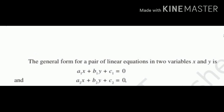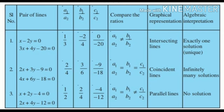If we write these equations in general form — a1·x + b1·y + c1 = 0 and a2·x + b2·y + c2 = 0 — and compare their ratios, we arrive at the following conclusions. For Case 1 (intersecting lines): a1/a2 ≠ b1/b2, and there is only one solution. For Case 2 (coincident lines): a1/a2 = b1/b2 = c1/c2, giving infinite solutions.